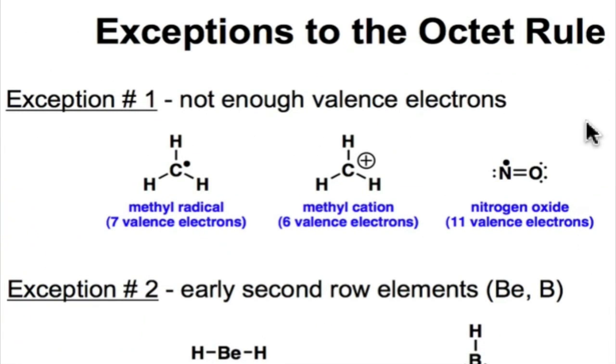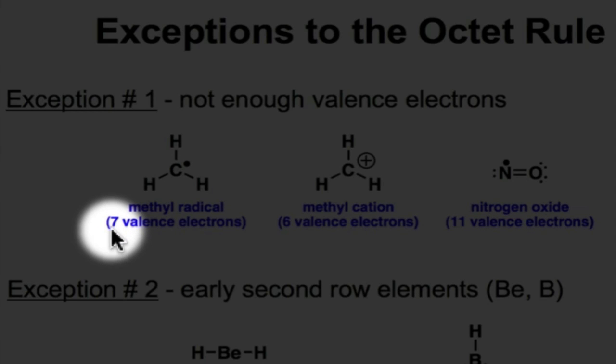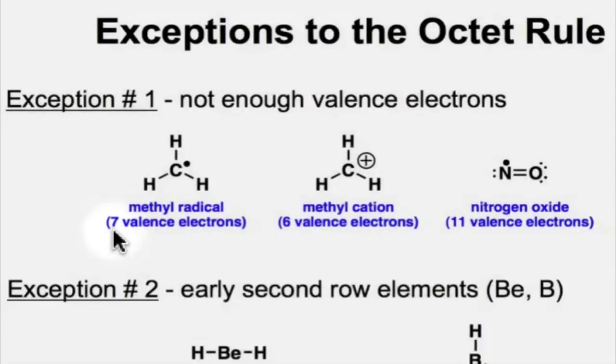And if we return to look at other structures, we'll see that in addition to the carbocation, there's the methyl radical. This is also an important intermediate. There, in this case, there's an odd number of electrons. And so meeting an octet of electrons would be impossible because there's an odd number of electrons.